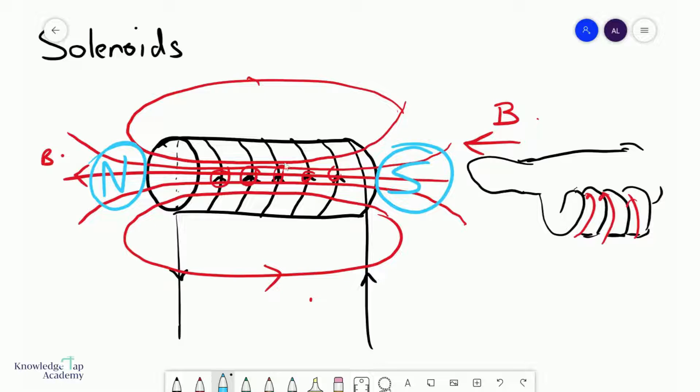And that is the magnetic field pattern of a solenoid. As for the quantitative part of it, the magnetic field strength or the flux density inside the solenoid is given by μ₀nI. μ₀ is 4π times 10 to the minus 7 in SI units. I is the current through the solenoid and n is what we call the turns per unit length.